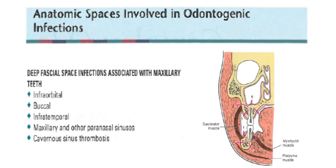The deep facial spaces associated with maxillary teeth include the infraorbital space, buccal space, infratemporal space, and maxillary/paranasal sinus spaces. As mentioned, infection can spread into the maxillary sinus causing secondary maxillary sinusitis, and in very serious cases it may spread further upward into the cavernous sinus leading to cavernous sinus thrombosis.